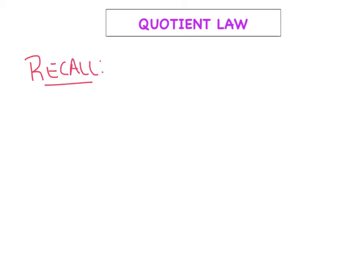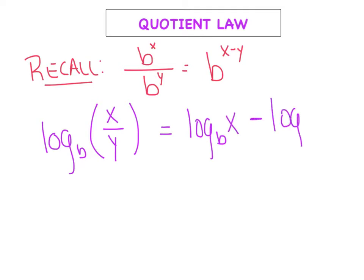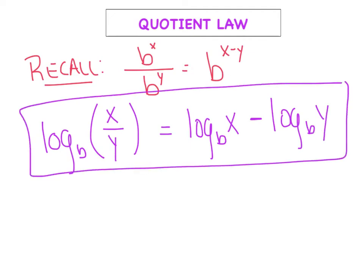Before we introduce the quotient rule for logarithms, recall what we know about exponents: b raised to the x divided by b raised to the y equals b raised to the x minus y power. So today you'll see some similarities. If we have log base b of x divided by y, we can expand that and say log base b of x minus log base b of y. Going left to right is expanding; right to left is condensing.